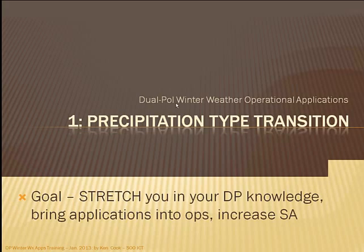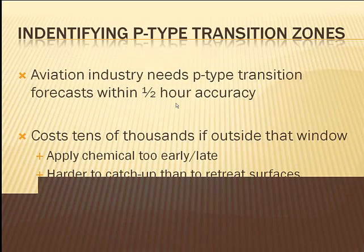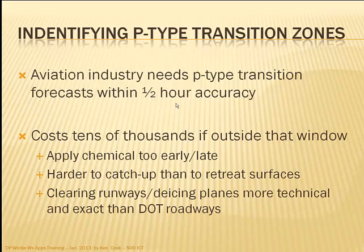The first thing we're going to talk about is precipitation type transition areas. Back a few years ago we had some of the airport folks over, and when we asked how we could better serve them, they told us some interesting things. The first is that they need forecasts of precipitation type transitions within a half-hour accuracy, plus or minus, of when we expect that to occur at the airport and every other airport we serve.